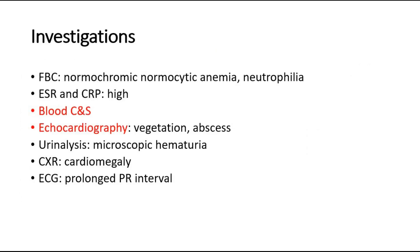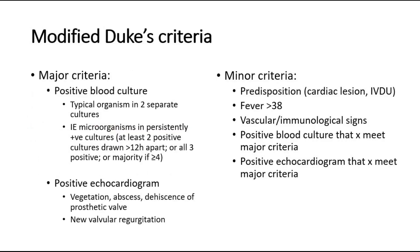These are the investigations we need to do. The most important are blood culture and sensitivity and echocardiography. Other investigations include full blood count — high ESR and CRP are expected. Urinalysis can be done to look for microscopic hematuria. Chest X-ray to look for cardiomegaly, and ECG may show a prolonged PR interval suggesting carditis. For blood culture and sensitivity, we do three sets of blood cultures at different times from different sites at the peak of fever. About 85 to 90% of cases are diagnosed from the first two sets, while around 10% are culture-negative.